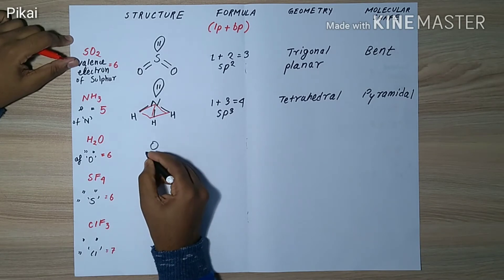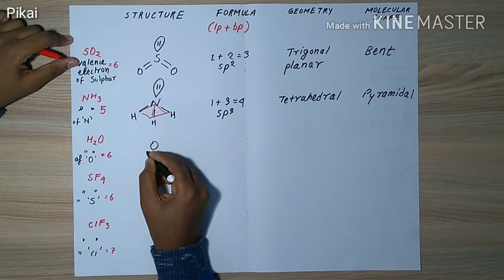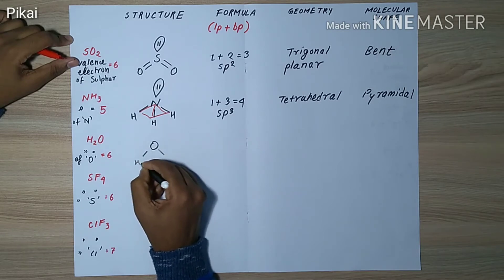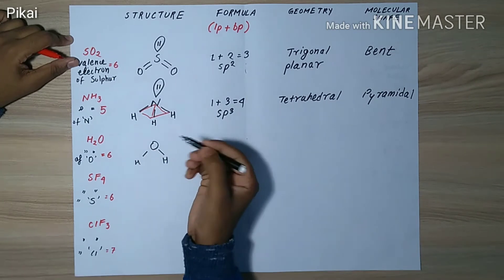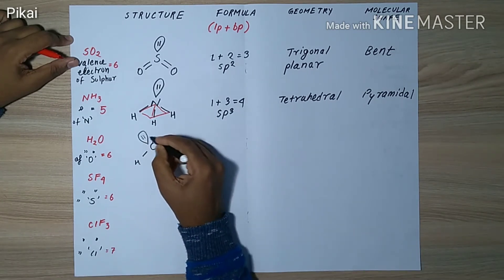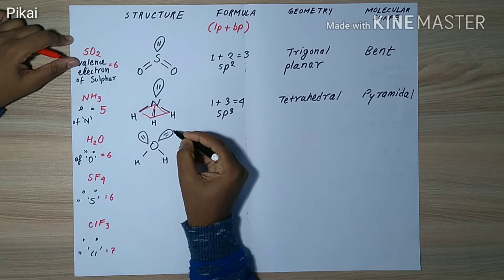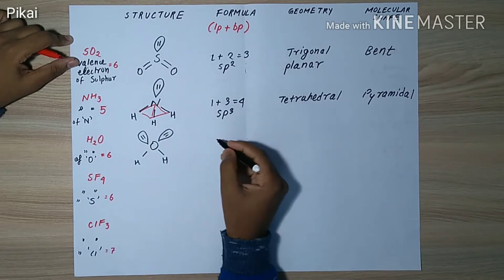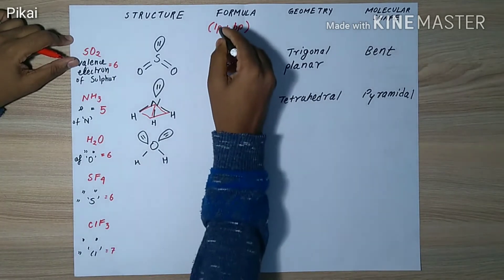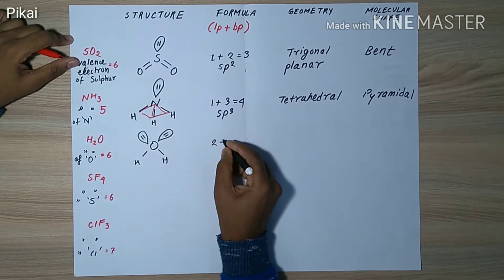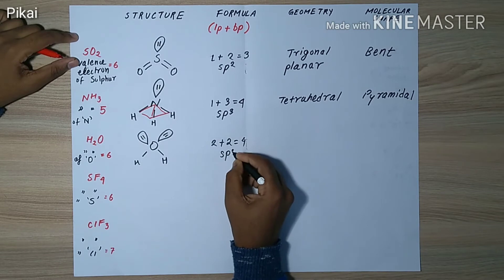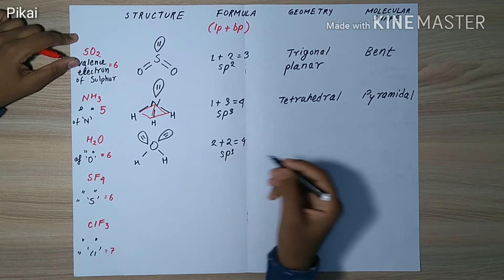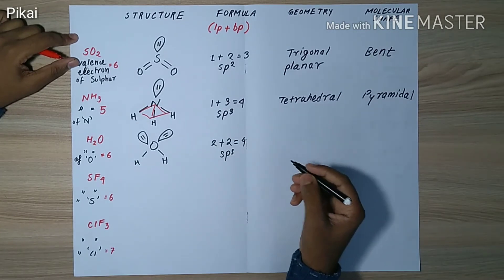In the case of H₂O, the central atom is oxygen with six valence electrons. It shares two with hydrogen atoms and we still have four electrons left, forming two lone pairs. From the formula, lone pair plus bond pair — two lone pairs plus two bond pairs gives four.